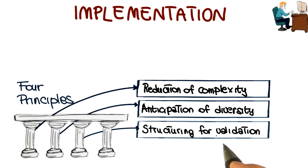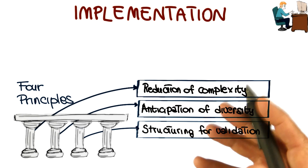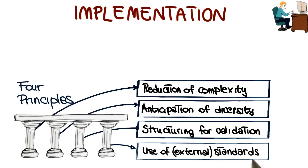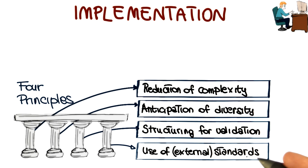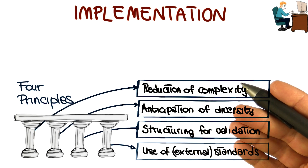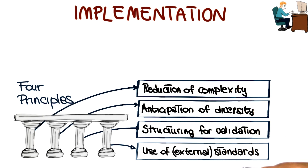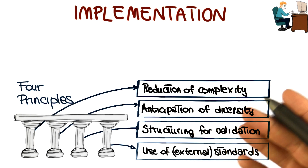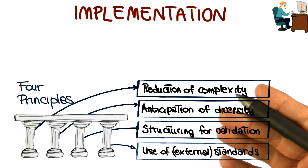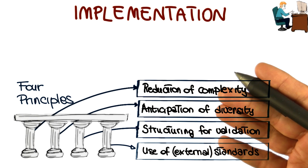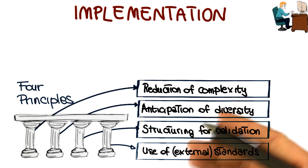Finally, and this is especially true within specific organizations and or domains, it is important that the software conforms to a set of internal or external standards. Some examples might be, for internal standards, coding standards or naming standards within an organization. As for external standards, if you're developing medical software, there are regulations and standards that you have to adhere to in order for your software to be valid in that domain.